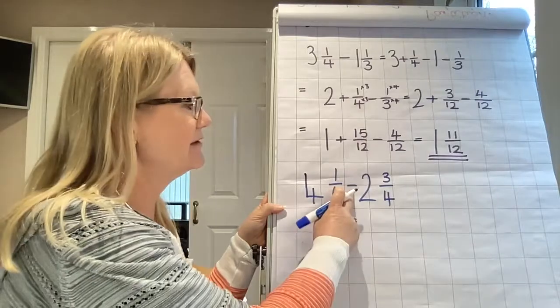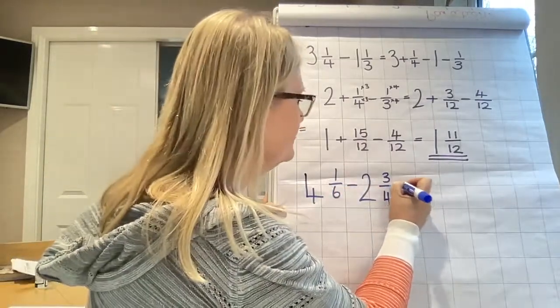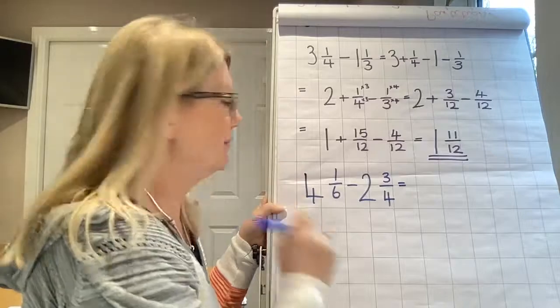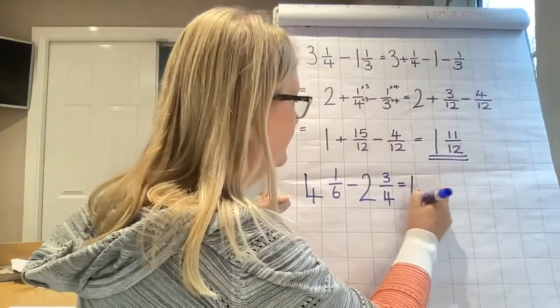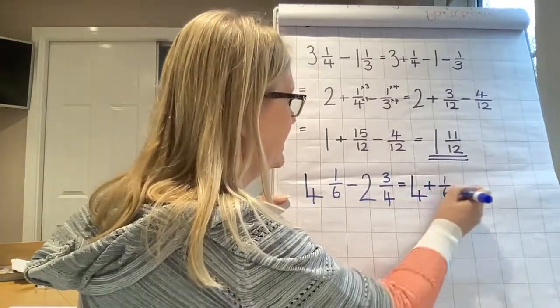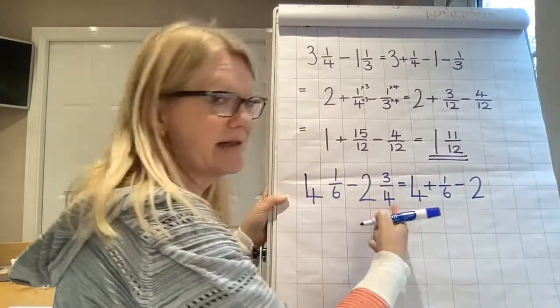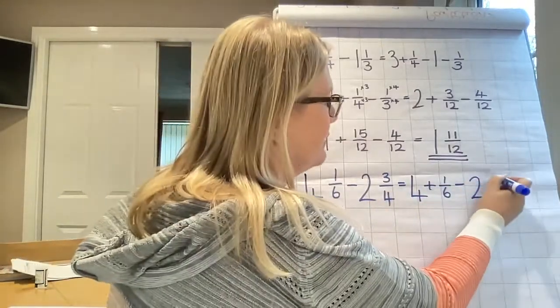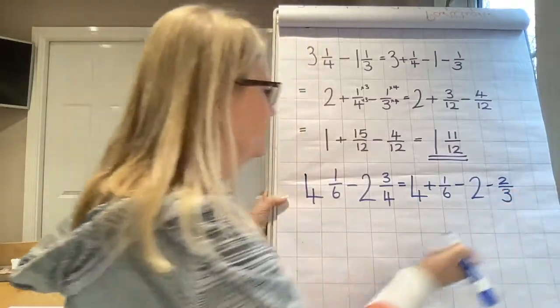Okay, what's the difference? Subtraction. Step number one, partition. Four plus one sixth, minus two, minus as well, the two thirds.